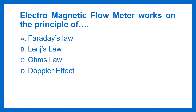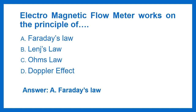Electromagnetic Flow Meter works on the principle of: Option A - Faraday's Law, Option B - Lenz's Law, Option C - Ohm's Law, Option D - Doppler Effect. The answer is Faraday's Law.